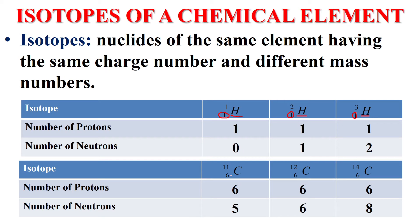Also, these are three isotopes of carbon. Carbon-11, Carbon-12, Carbon-14. C-6-11, C-6-12 and C-6-14 are isotopes. Why? They are isotopes because nuclides of the same element having the same charge number, which is 6, but different mass numbers.